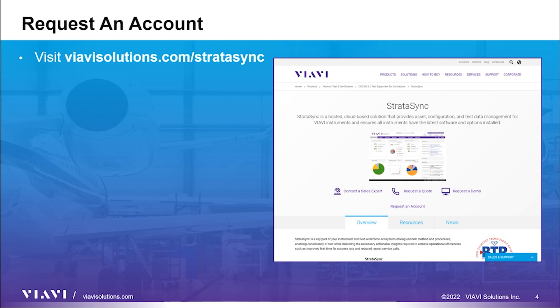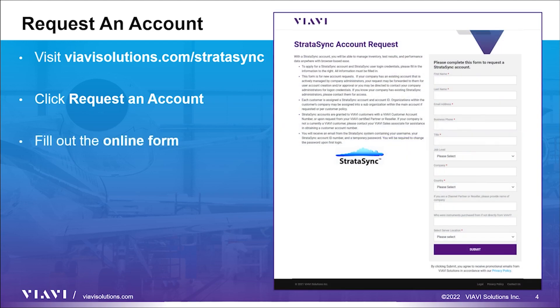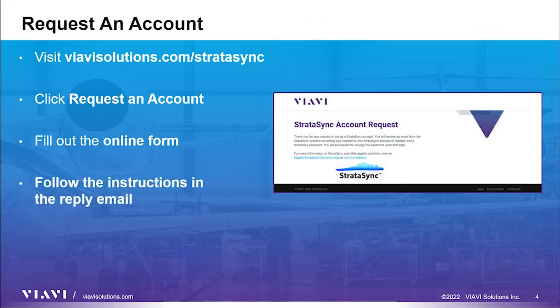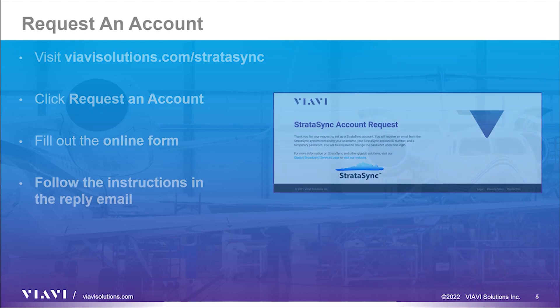Visit our Stratasync account request page at www.viavisolutions.com. Press the Request an Account button on the resulting webpage and fill out the required information in the online form. You will receive an email with all of the information required to access your new Stratasync account.